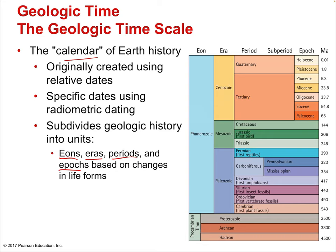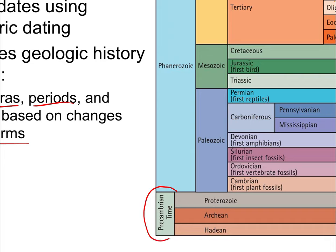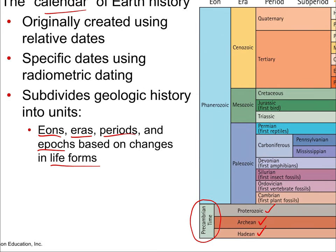Starting back 4,500 million years ago — that is, 4.5 billion years — that's the beginning of the Earth. That eon is referred to as Precambrian time, which includes the very early Earth. We have the Hadean — referring to Hades, when Earth was like hell — then the Archean, then the Proterozoic. These are all different eras within the Precambrian eon, a catch-all phrase for these early periods up to about 2.5 billion years ago, with the Proterozoic ending at 543 million years ago.